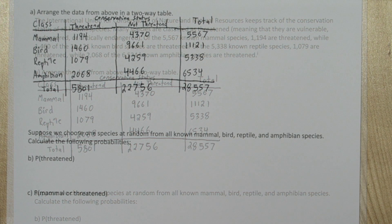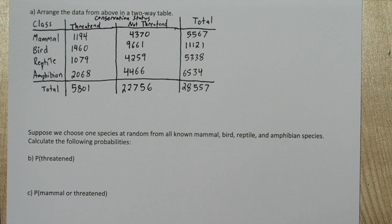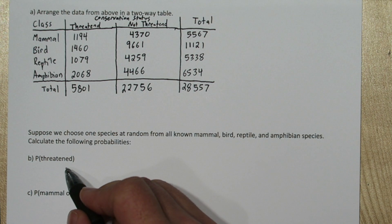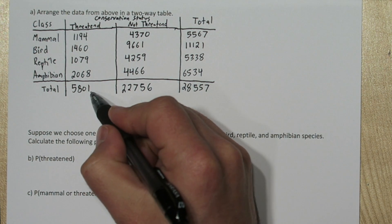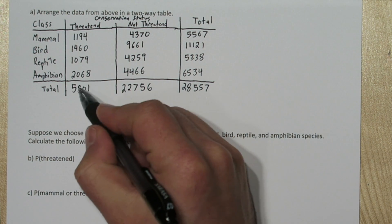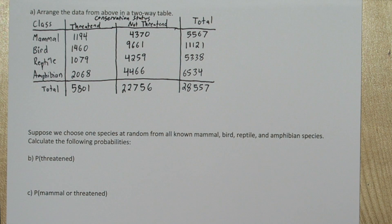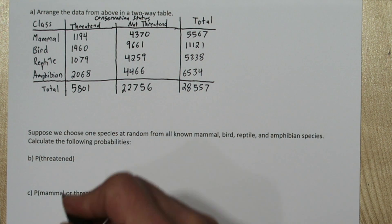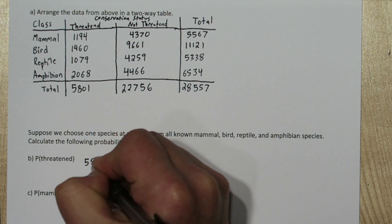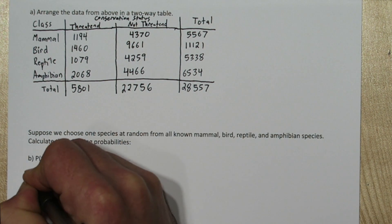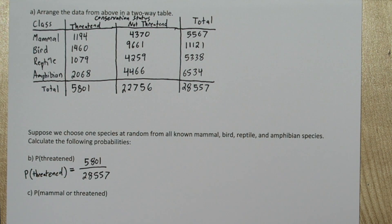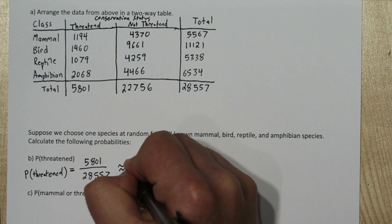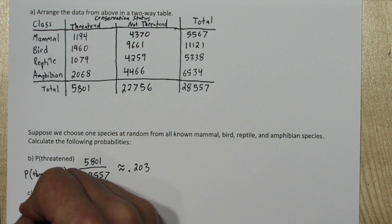Our two-way table makes these probabilities easy to calculate. For the probability of threatened, there are 5,801 threatened species out of a total of 28,557. Arranging those as a fraction gives us a probability of approximately 0.203.